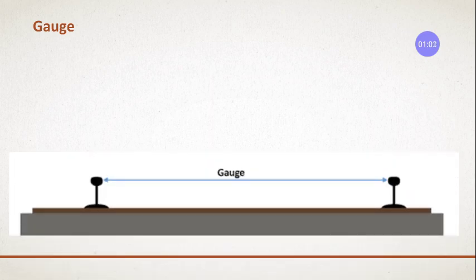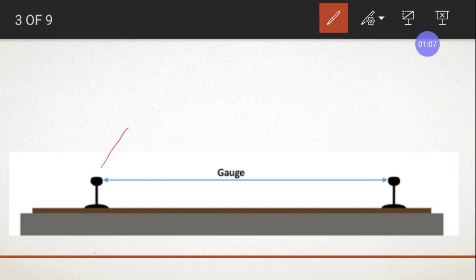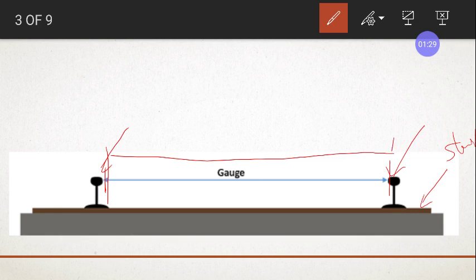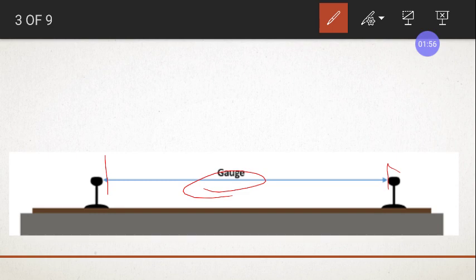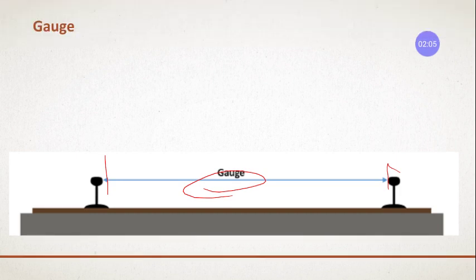What is gauge? These are your two rails, and the brown colored ones are sleepers. The in-to-in distance between the two rails - that is, the inner distance - is called gauge. This is very important. You can't change that distance; if you change it, the train cannot move over that track. There should not be any changes in that gauge distance.